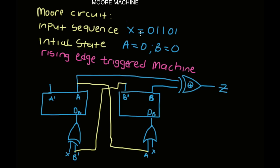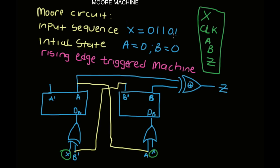The input sequence is x = 0, 1, 1, 0, 1, and the initial state is A = 0 and B = 0 — so B' is going to be 1. Since it's a rising edge triggered machine, in the timing diagram we need five variables: x, clock, A, B, and Z. Your x changes from 0, 1, 1, 0, 1, and changes to x will affect A and B. A mixture of A and B affects Z — not x — because that would be a Mealy machine.